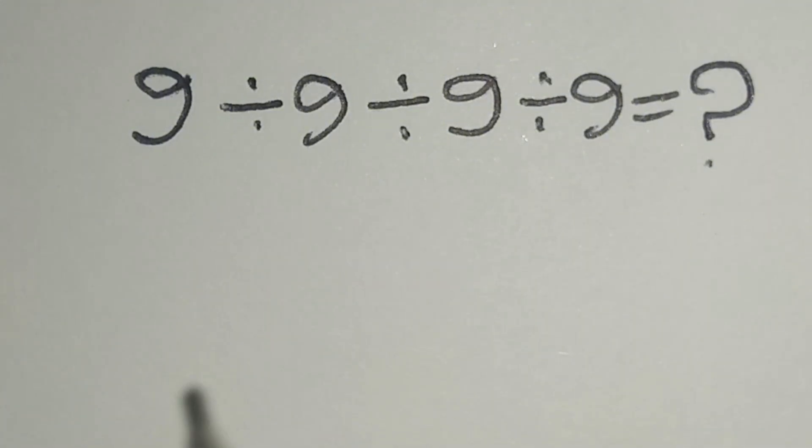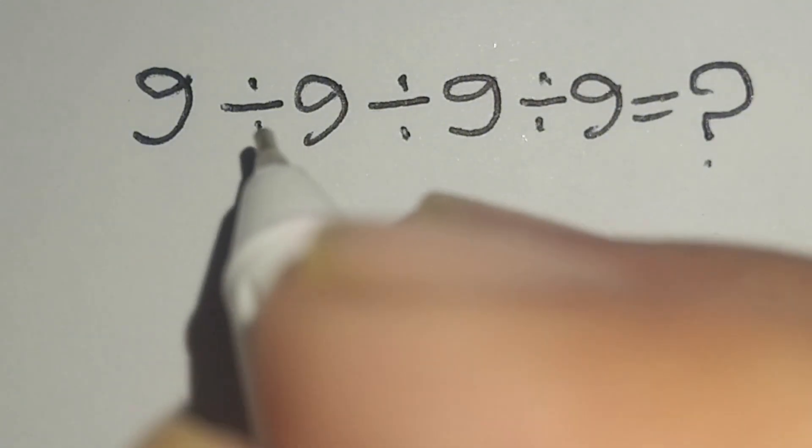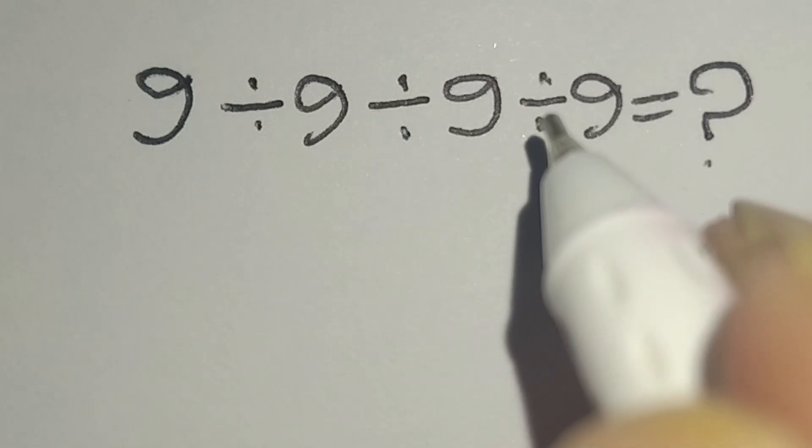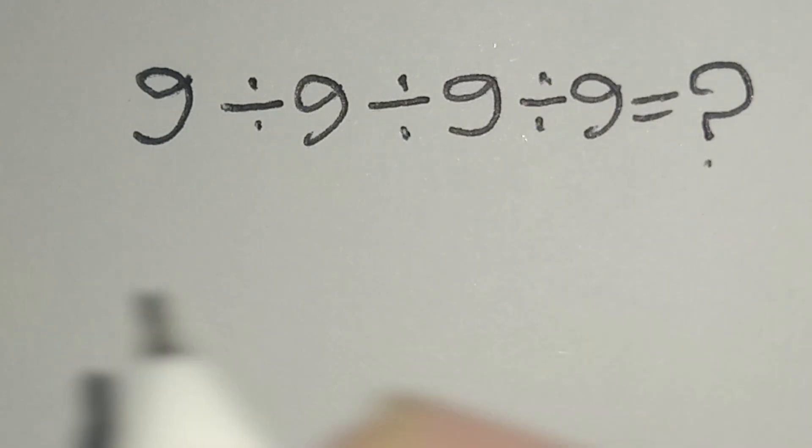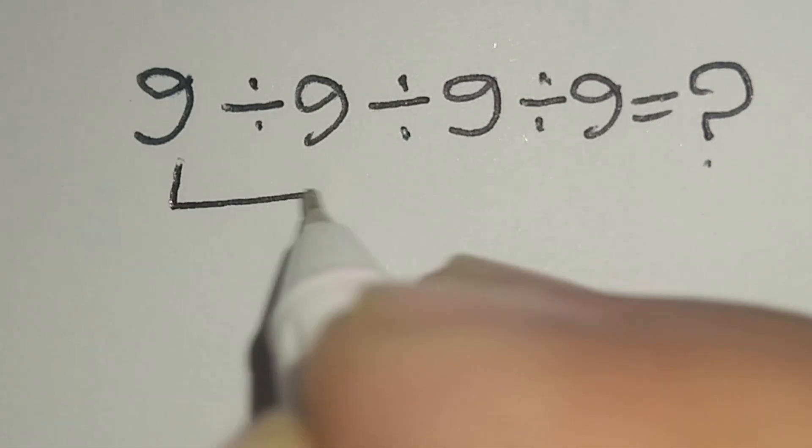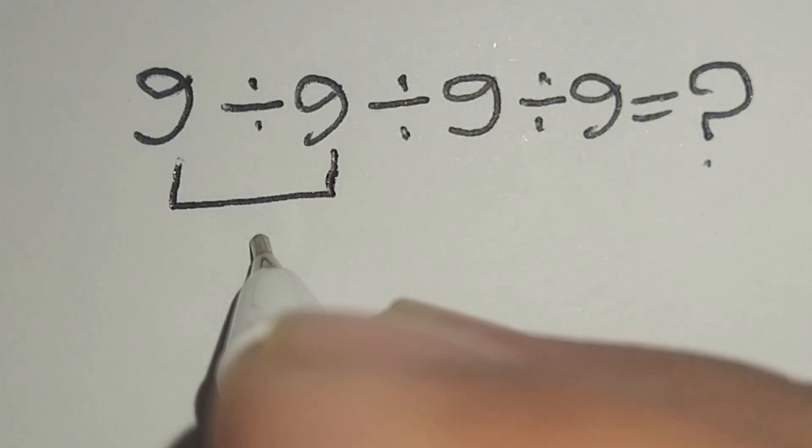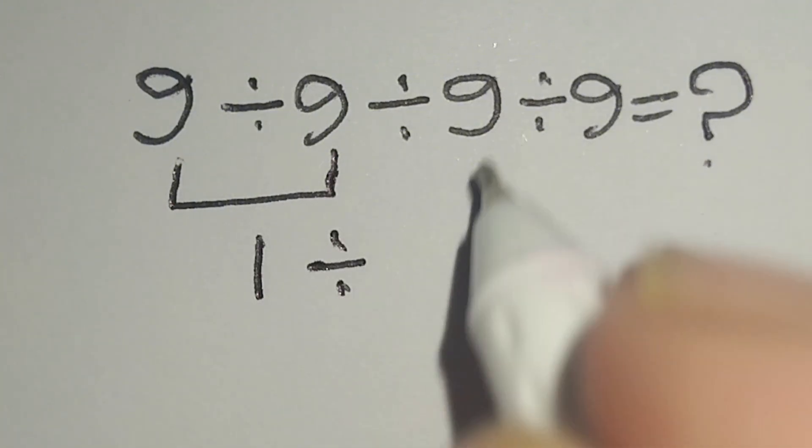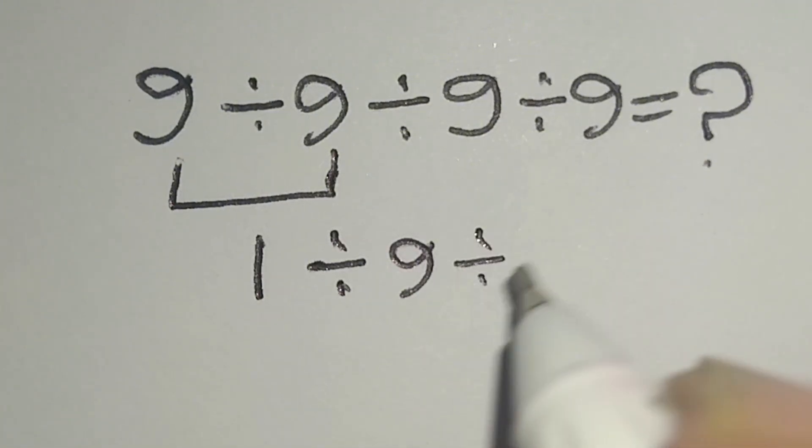At first, we have to work with this division, then this division, then this division. Therefore, here 9 divided by 9 gives us 1, divided by this 9, divided by this 9.